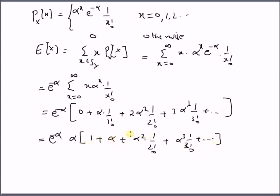That means this is nothing but the Taylor series expansion of the exponential function e^α. So we have α · e^(-α) · e^α, which equals α.